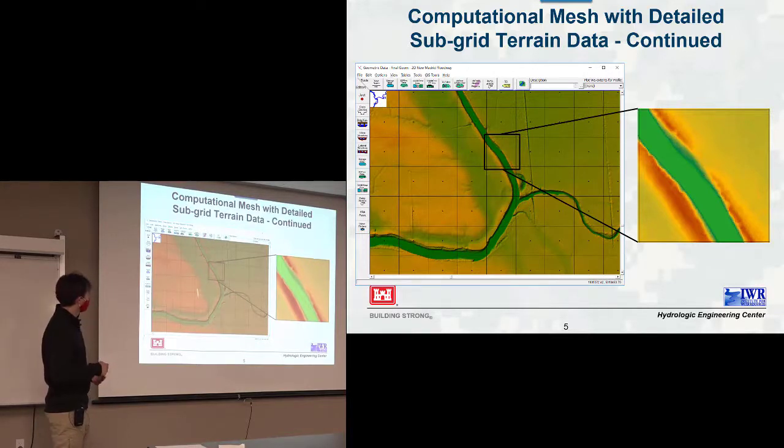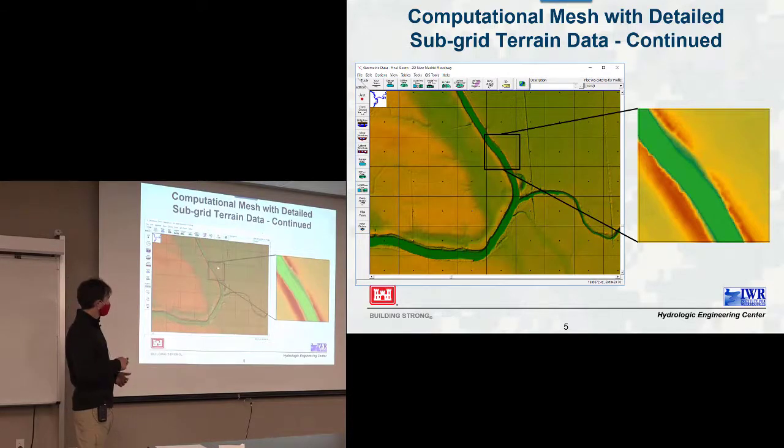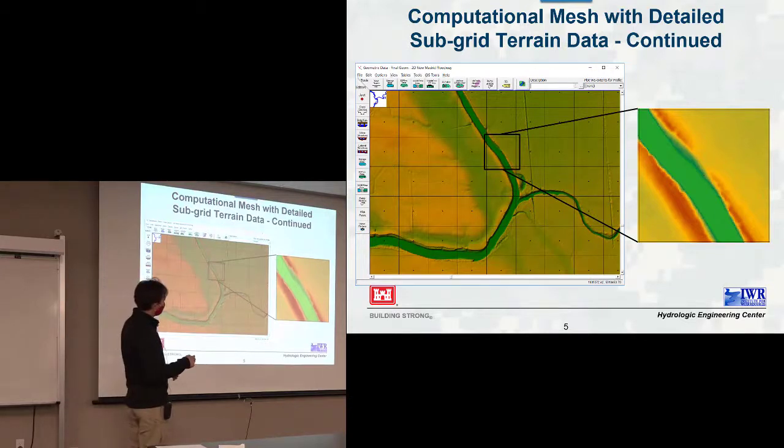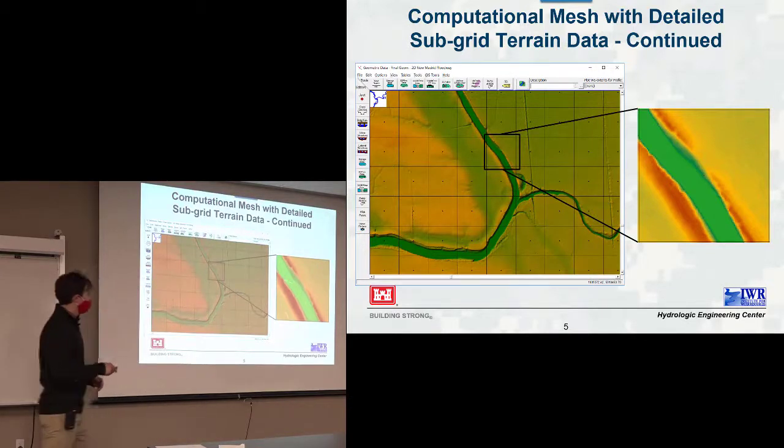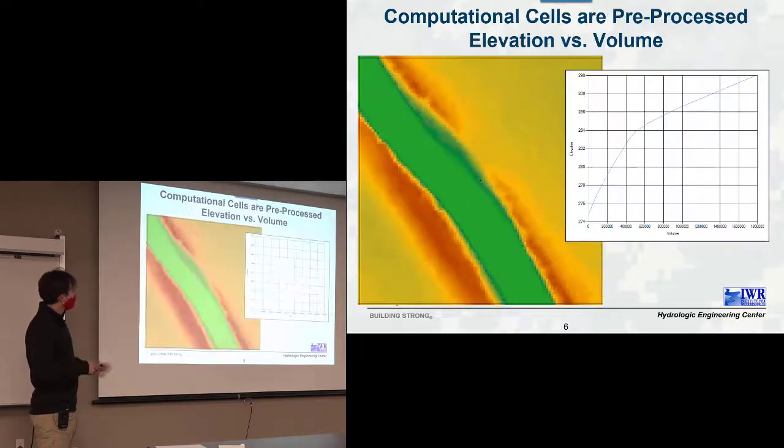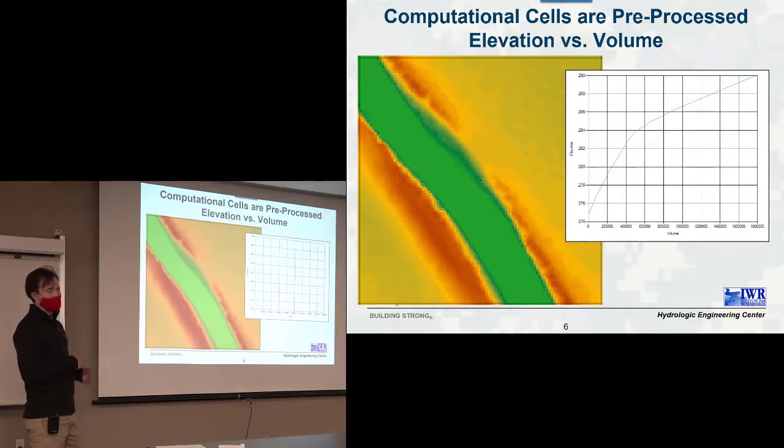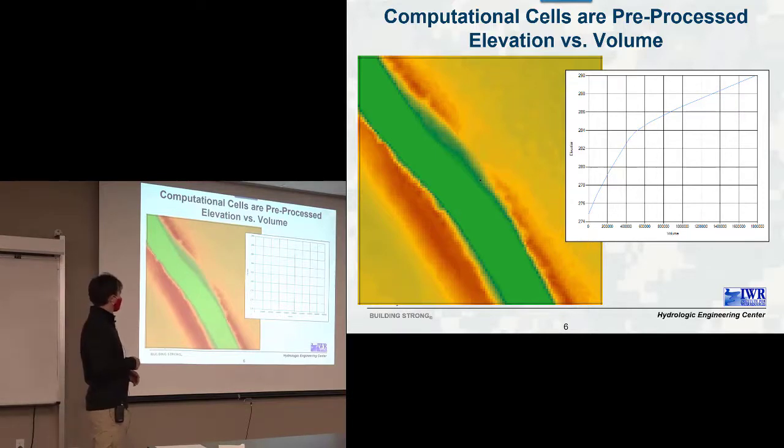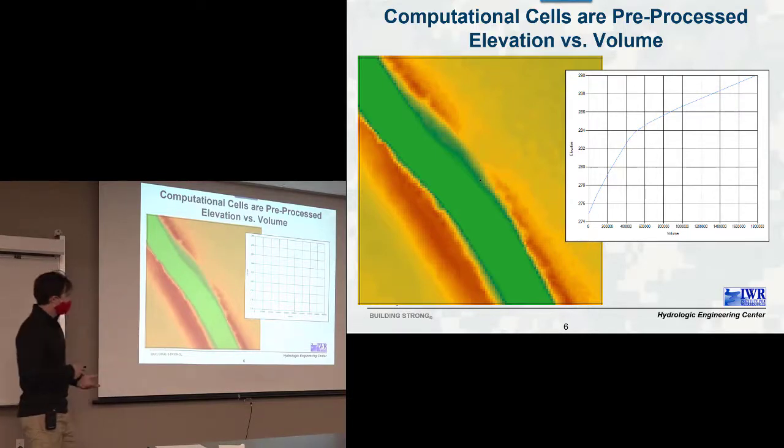This is a computational model with a very small channel compared to the grid resolution. And if you take the cell and then zoom in, you can see how the terrain varies within the cell. And then from that terrain, at the cell, it computes a volume elevation curve and also a volume area curve or horizontal area curve. And it uses those during the computation. It knows that at this elevation, it has this amount of volume within the cell.